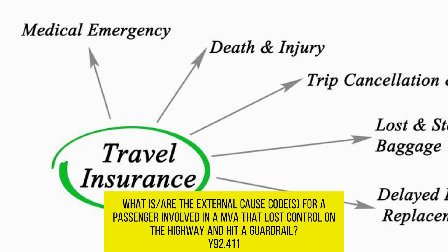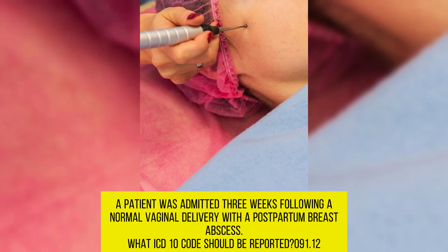What are the external cause codes for a passenger involved in a motor vehicle accident where the driver lost control on the highway and hit a guardrail? V92.411. A patient was admitted 3 weeks following a normal vaginal delivery with a postpartum breast abscess. What ICD-10 code should be reported?